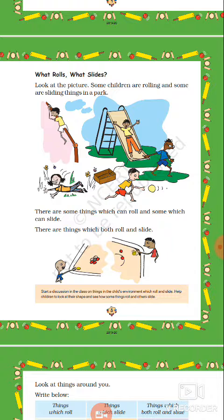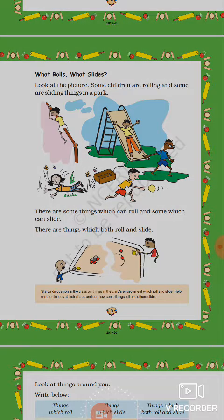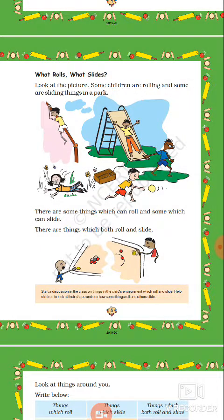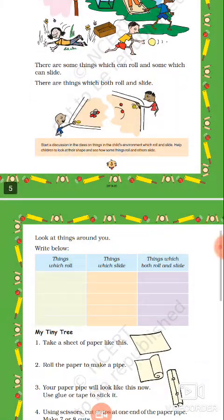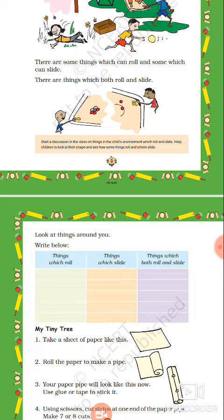So now you can see that there are many things that can roll on the ground, and some other things that can slide. Also, there are some things that can either roll or slide, like a boy is sliding on the slide whereas a girl is rolling on the ground. Now just write in your notebook five things that can roll, five things that can slide, and some things that can do both — roll as well as slide.